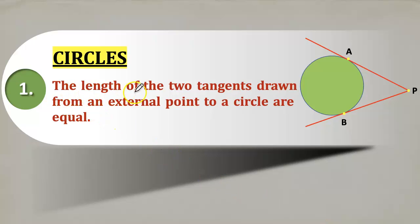We know that the length of the two tangents drawn from an external point to a circle are equal. Here external point is P. PA and PB are the tangents from the same point, so we can write that PA equals PB.